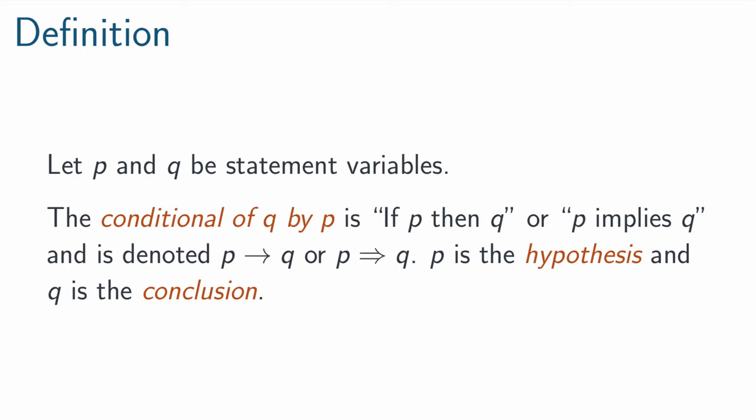Those are both grammatically correct things to say. We denote that with either a right arrow or a double right arrow. Both of those notations are correct, and your text uses the first. P we call the hypothesis, and Q we call the conclusion.